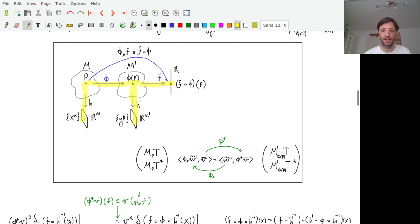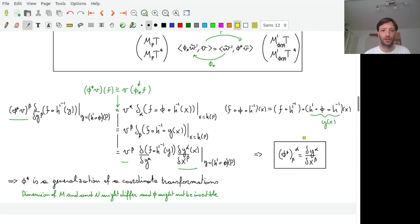And with that we realized in the end that our push forward is a generalization of a coordinate transformation once you introduce the charts for the two manifolds.